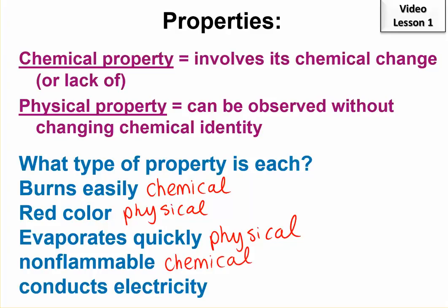And conducts electricity. This one's interesting. If you have a copper wire and a current runs through it, is the copper still copper? It is. It retains its identity. So conducting a current is just a physical thing that happens. So this is a physical property. That one gets people. Be sure you know each of these for your test.